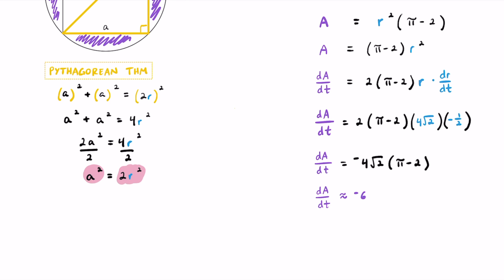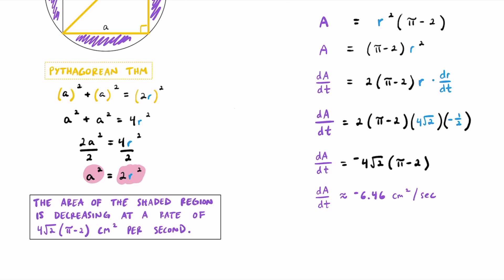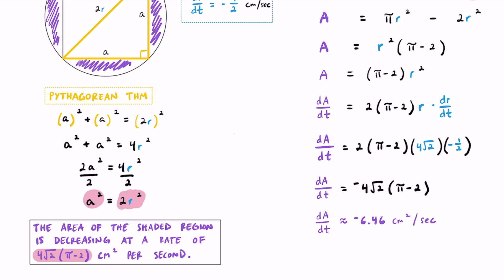The result is approximately negative 6.46, and it's negative because the area is decreasing. The area is measured in centimeters squared per second. We conclude that the area of the shaded region is decreasing at a rate of 4√2 times (π minus 2) cm²/s when the radius is exactly 4√2 centimeters. That's one strategy for tackling this related rates problem with a square inscribed inside a circle.